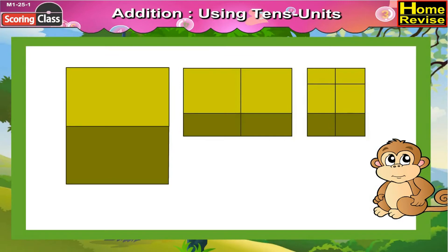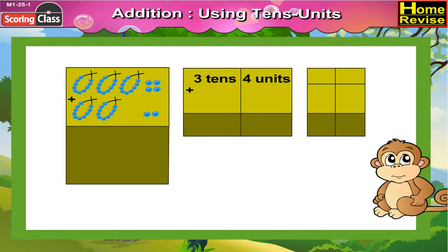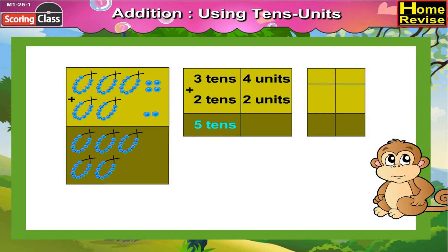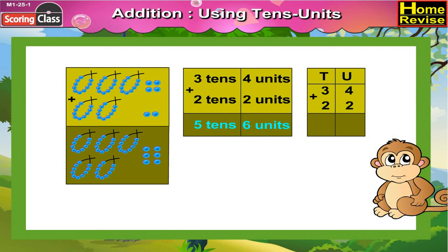In the next picture, we have 3 strings of 10 beads and 4 single beads, that means 3 tenths 4 units, plus 2 tenths 2 units. 3 tenths plus 2 tenths makes 5 tenths and 4 units plus 2 units would be 6 units. Under T we will write 3 and 2, under U we will write 4 and 2. So it is 34 plus 22, which is equal to 56.